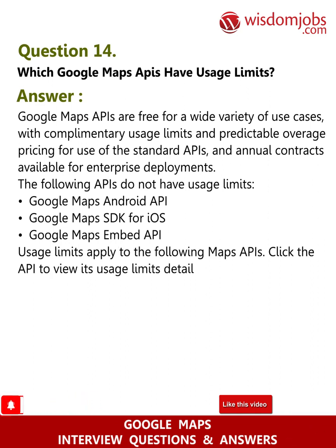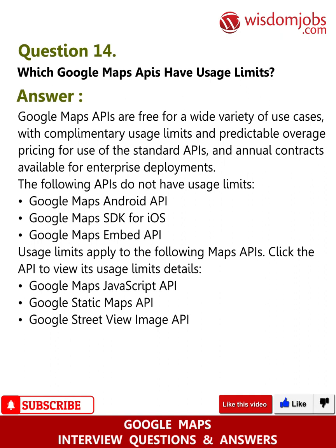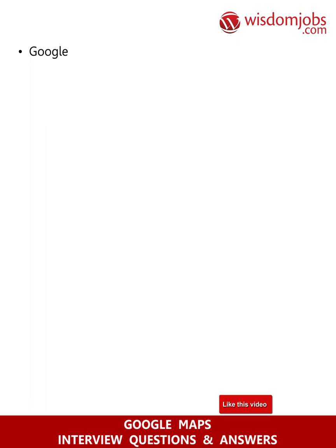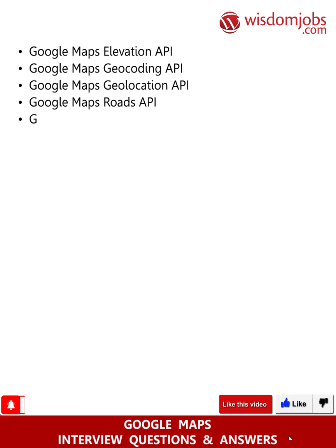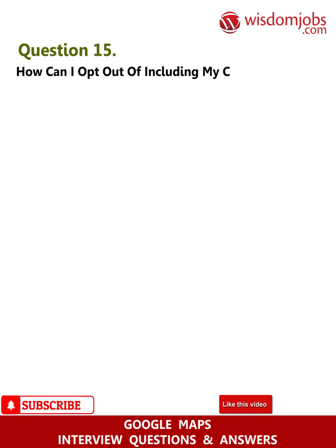Usage limits apply to the following Maps APIs — click the API to view its usage limits details: Google Maps JavaScript API, Google Static Maps API, Google Street View Image API, Google Maps Directions API, Google Maps Distance Matrix API, Google Maps Elevation API, Google Maps Geocoding API, Google Maps Geolocation API, Google Maps Roads API, and Google Maps Time Zone API.